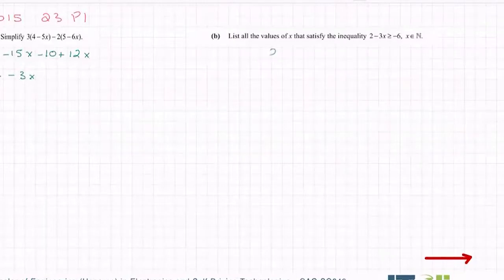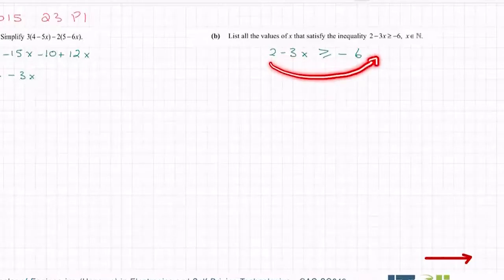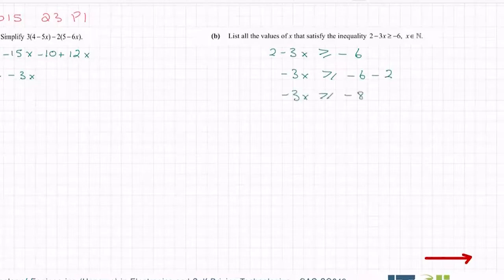Just like we would any other algebra sum, I'm going to bring letters to one side and numbers to the other. So I'm going to leave the x's on the left and I'm going to bring that 2 over here to become minus 2. So I have minus 3x is greater than or equal to minus 6 minus 2. Minus 3x is greater than or equal to minus 8.